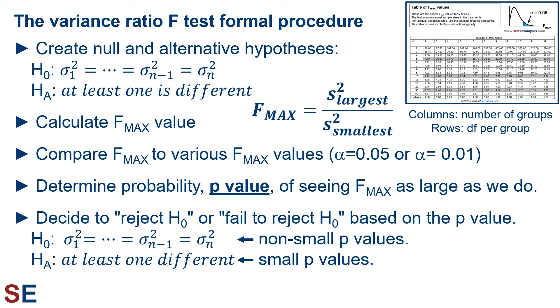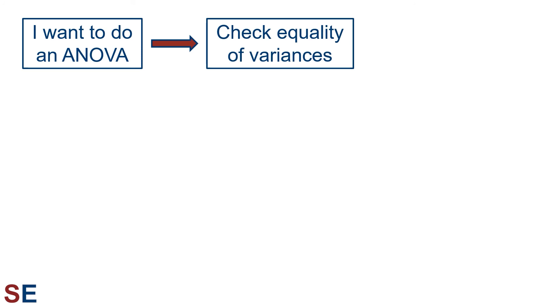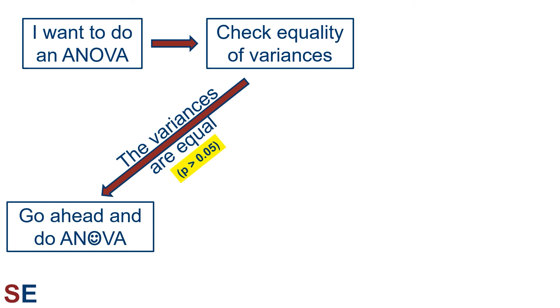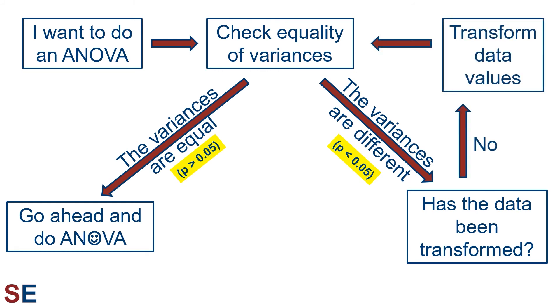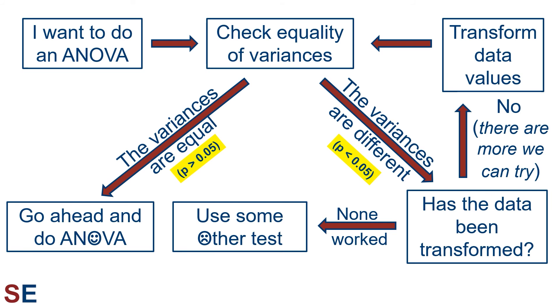The F-max test most often arises as a precursor to doing an ANOVA. If we want to do an ANOVA, the first step is to check for equality of variances using an F-max test or similar technique. If the variances are concluded to be equal, we proceed with the ANOVA. If not, we cannot do the ANOVA, and we ask whether the data has been transformed. If not, we transform the data and recheck variance equality. We may try several transformations, hoping to equalize the variances so we can do the ANOVA. If no transformation works, we must use some other statistical test, which we generally prefer to avoid because other tests are more complicated and have less statistical power than the ANOVA.